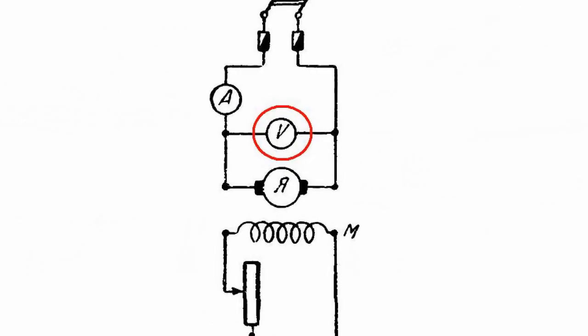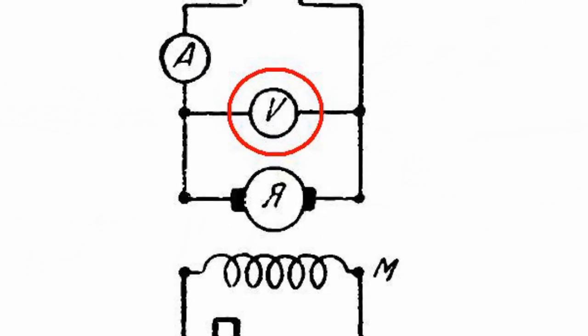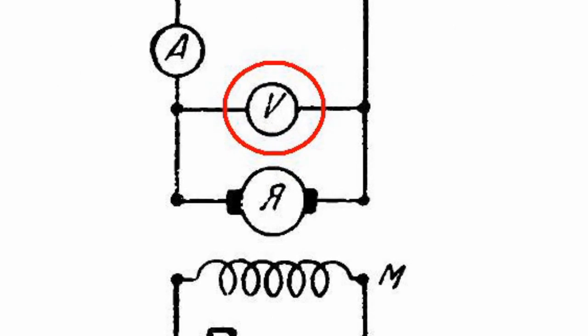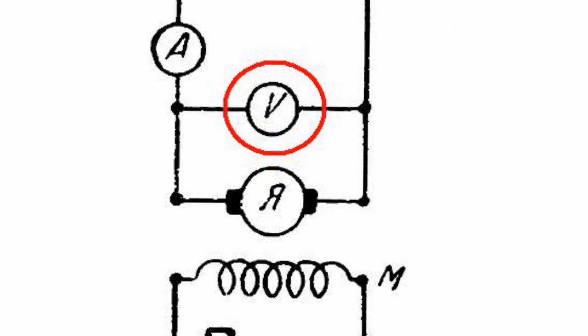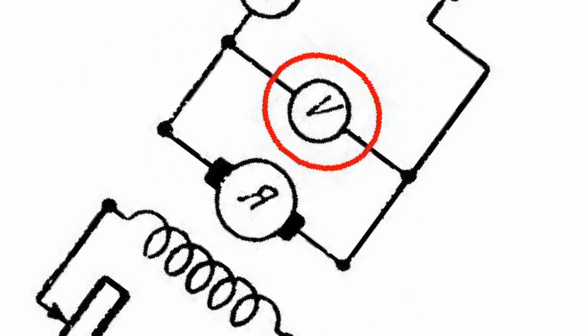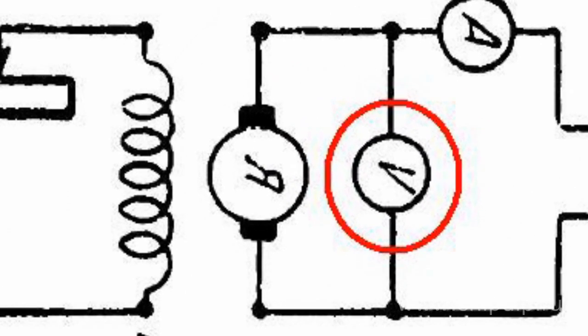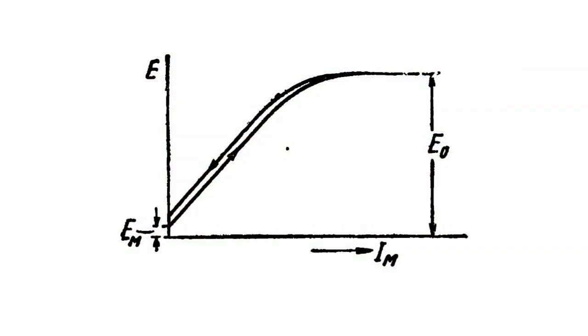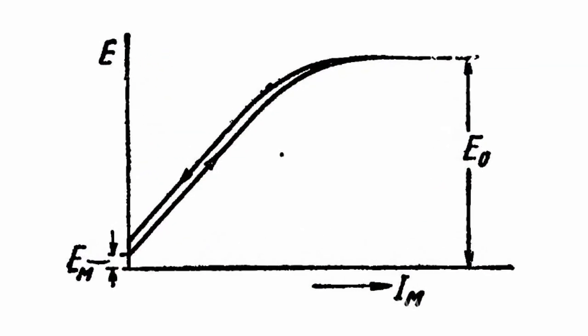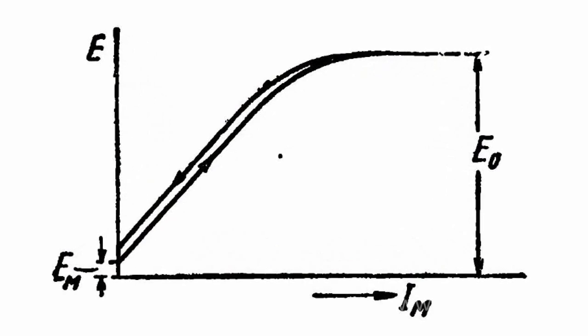In the case of an open external circuit, the voltmeter connected to the armature clamp measures the induced EMF. The relation of EMF to exciting current is called the non-load characteristic. The figure shows the characteristic curve at a constant rotation rate.